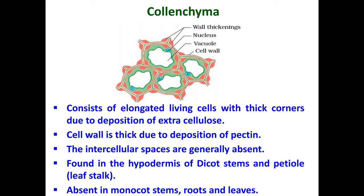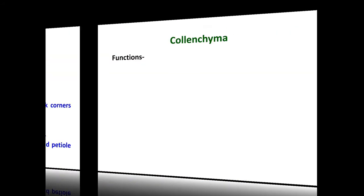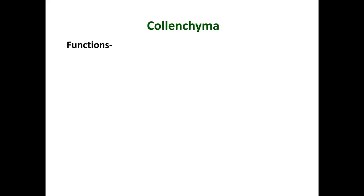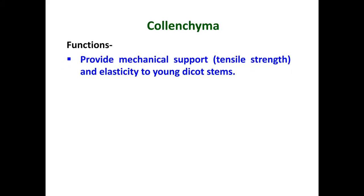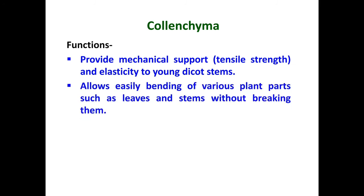Collenchyma provides mechanical support — that is, tensile strength and elasticity — to the young dicot stems. Due to its elasticity, it allows easy bending of various plant parts such as leaves and stems without breaking them.